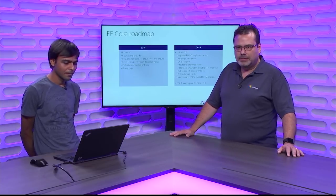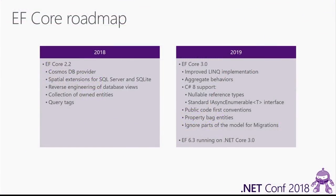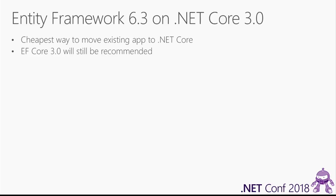The next item is Entity Framework 6.3 working on .NET Core 3.0. We started talking about this in May when we made the first announcement about what .NET Core 3.0 was going to be about. The main reason we are doing this is that we want people to be able to move from .NET Framework to .NET Core 3.0 very easily. .NET Core 3.0 is going to support desktop technologies like WPF and WinForms, and many existing applications use EF6 for data access, so we want to enable those applications to move to .NET Core 3.0 very easily.